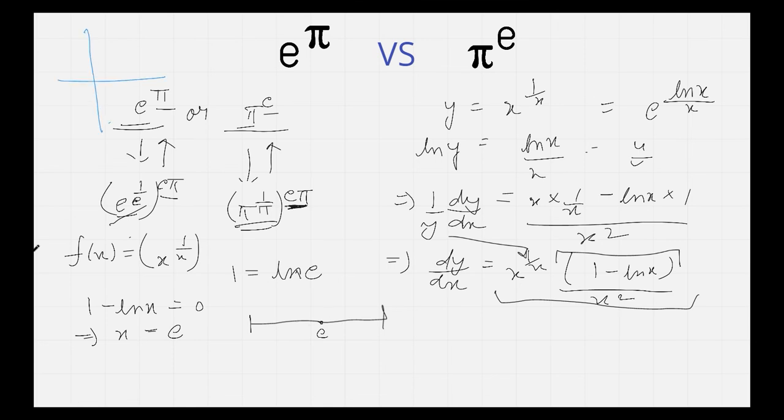Before e, x would be smaller than ln e, so this overall 1 minus ln x would be positive. But as it crosses e, it would be greater than ln e. ln e is 1, so this would be negative.